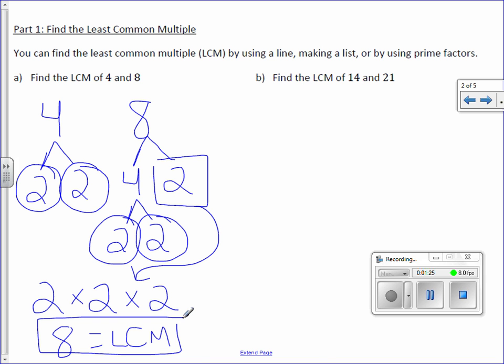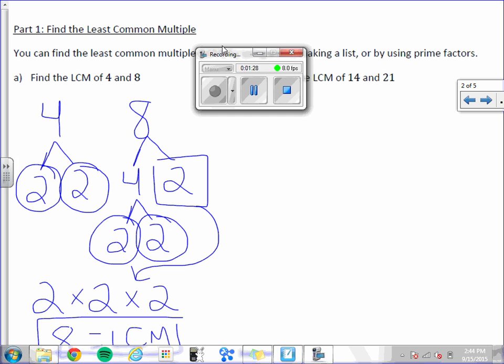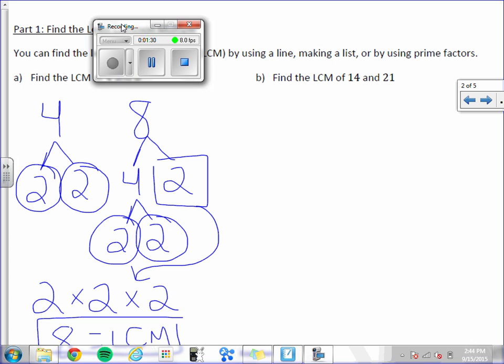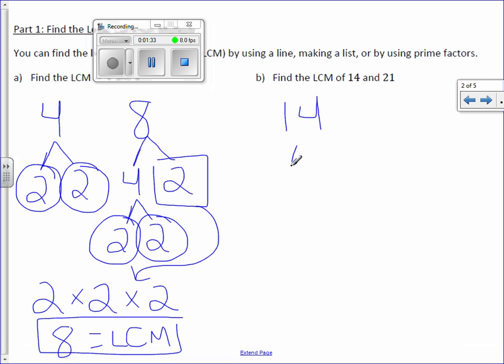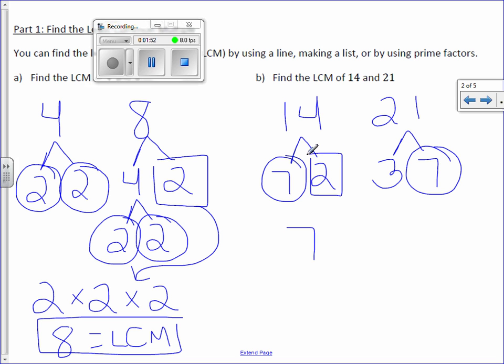Letter B, find the LCM of 14 and 21. 14 can be written as 7 times 2. 21 can be written as 3 times 7. The prime factor they both have in common is 7. And then we have a 2 and a 3 left over, so we will multiply by both the 2 and the 3 to find our LCM.